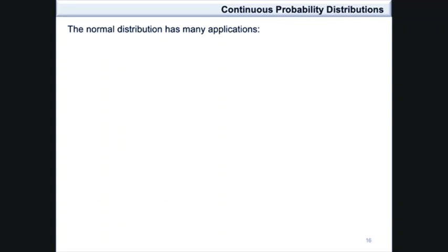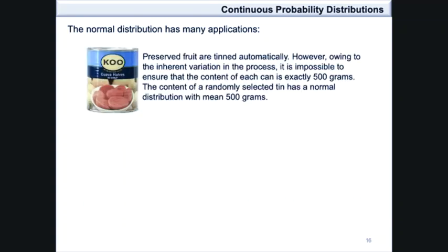Let's consider an example where preserved fruit are tinned automatically. If the tins are expected to be 500 grams, there may be variation as some tins may be more or less than 500 grams. As a result of the inherent variation of the process,